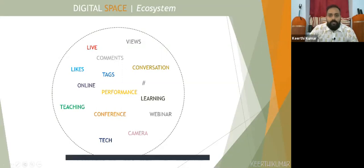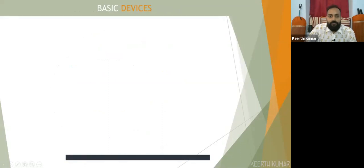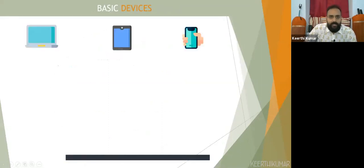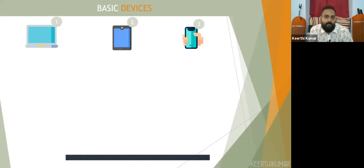Coming to the next aspect — devices. The basic devices we need to be in the digital space and make a statement are the laptop, tablet, and cell phone. I'm putting them in order of preference, especially for something like a webinar or conference. I would always suggest viewing and conducting it on a laptop — it is a much more stable device. Then comes the tablet, and last is a handheld smartphone.